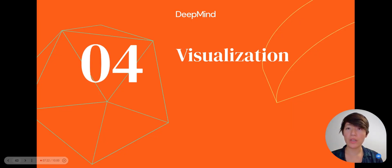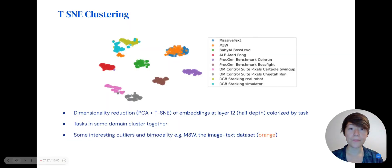We made visualizations to qualitatively understand how Gato processes information from different domains. This slide shows a t-SNE clustering of Gato's embeddings at layer 12 halfway down the transformer depth. Each data point is colorized by the task of the embedded observation. Tasks from the same domain cluster neatly together with some interesting outliers. For example, multimodal massive web M3W is a text and image dataset, so it overlaps significantly with massive text, a text-only dataset, but it also clusters near the RGB stacking tasks.